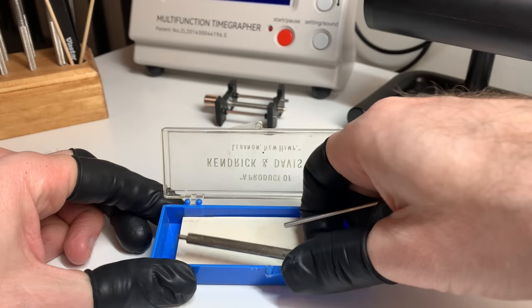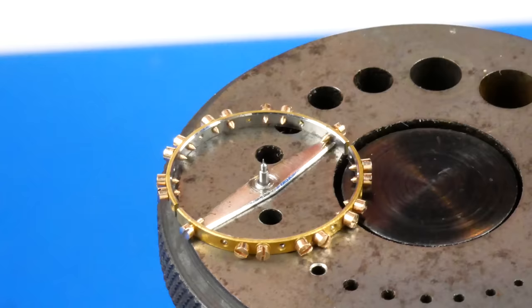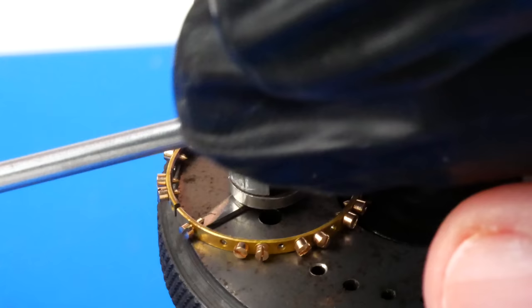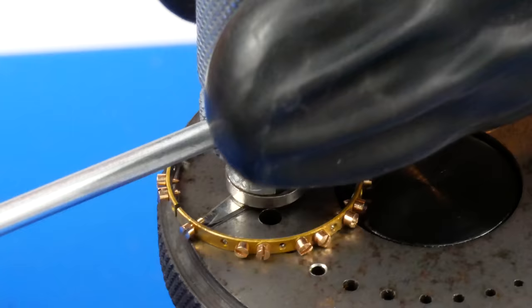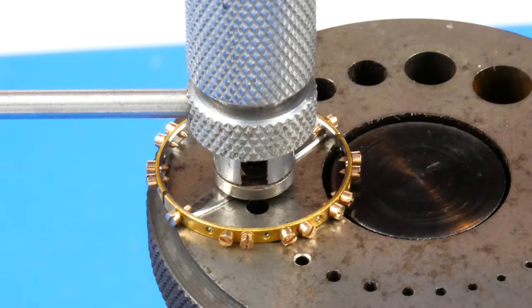I'm using the KND number 50 staff remover helper, which clamps the arms of the balance while the staff is punched out. Since the staff is riveted to the arm, the arm needs to be secured during the punching process or the arm will fold up as the staff is pressed down.